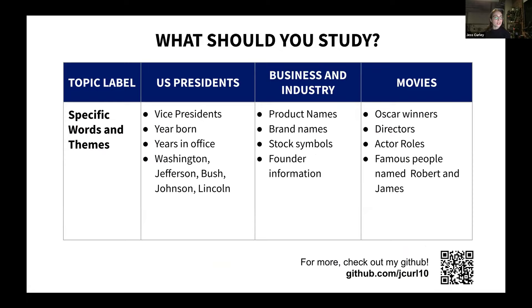The teacher in me is cleaning up those word clouds to provide you with an actual resource of what you should study. These are just three out of the 10 major topics that came out of those 13 clusters. If you want to see more, please check out my GitHub linked at the bottom. For US presidents, you'd want to study vice presidents, when they were born or in office, and specific presidents. For business and industry, you'd want to know stock symbols, founder information, and product names. And for movies, you definitely want to know Oscar winners, actors' roles, and directors.